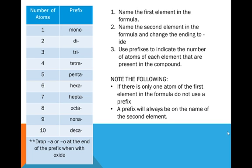For example, to name a chemical compound that is molecular: name the first element in the formula, name the second element in the formula and change the ending to IDE. We're going to use prefixes to indicate the number of atoms of each element that are present in the compound.